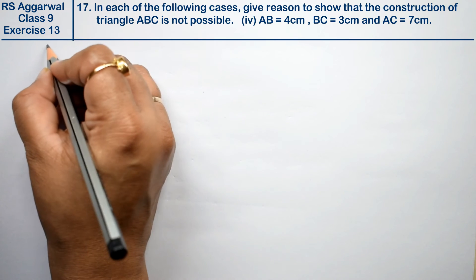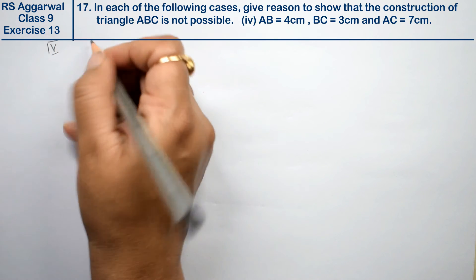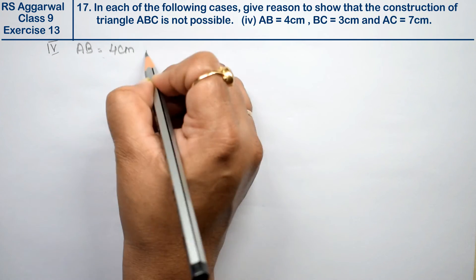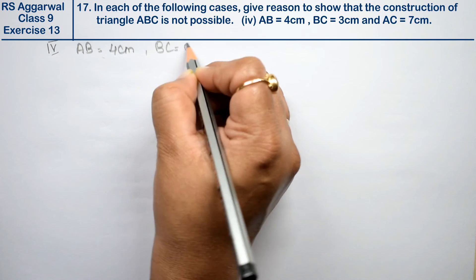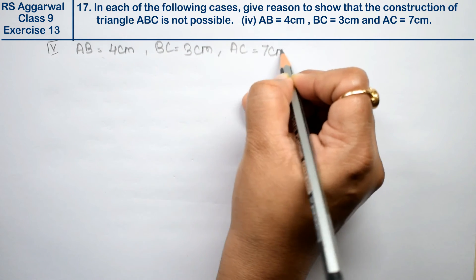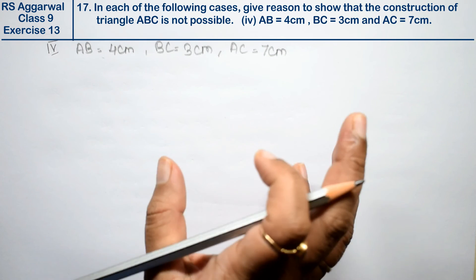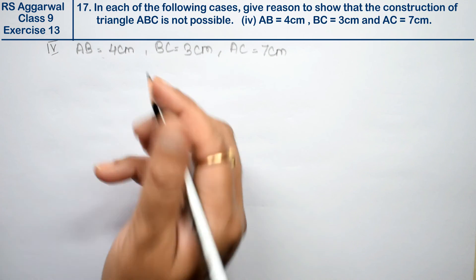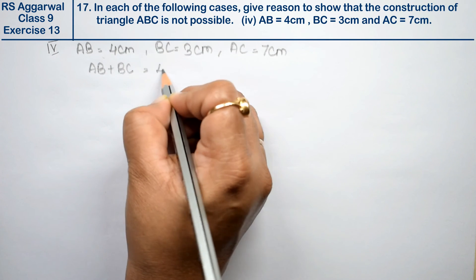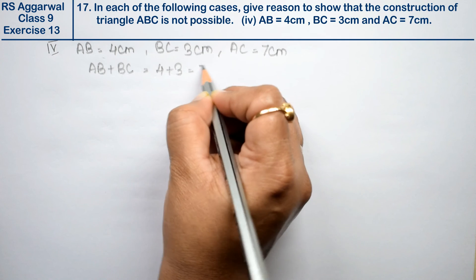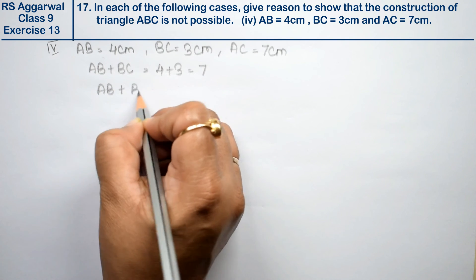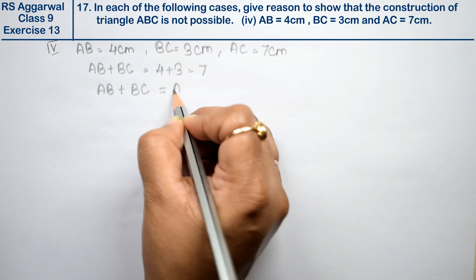Fourth part is AB equals to 4 cm, BC equals to 3 cm, and AC equals to 7 cm. Here we can see that if we add AB plus BC, then this is more than third side. That means AB plus BC is equal to AC.